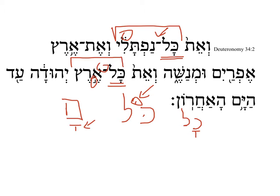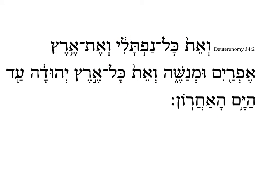You know it's a qamets qaton when it is in a closed, unaccented syllable. The word kol here is closed — you have consonant, vowel, consonant — and it's unaccented because the accent has moved later to the word to which it's connected. The other trick is because the word had a holam, an O sound, it's going to reduce to a qamets qaton, an O sound here also.